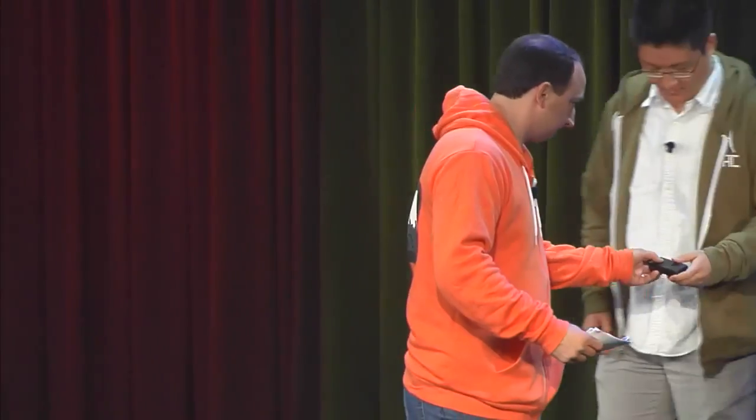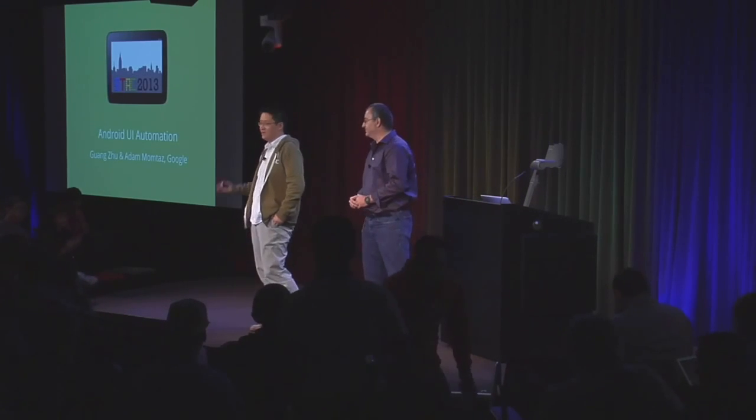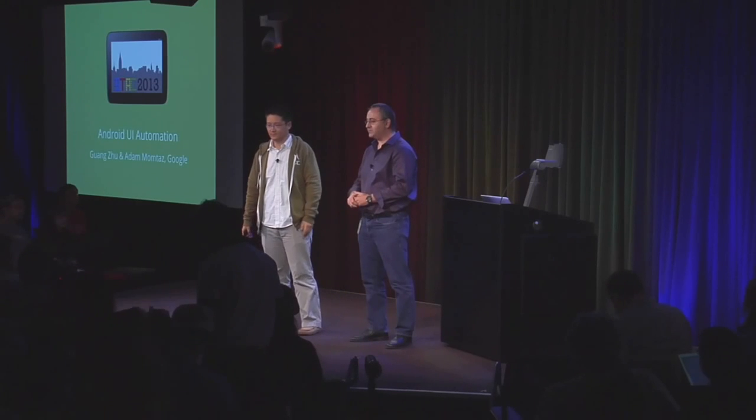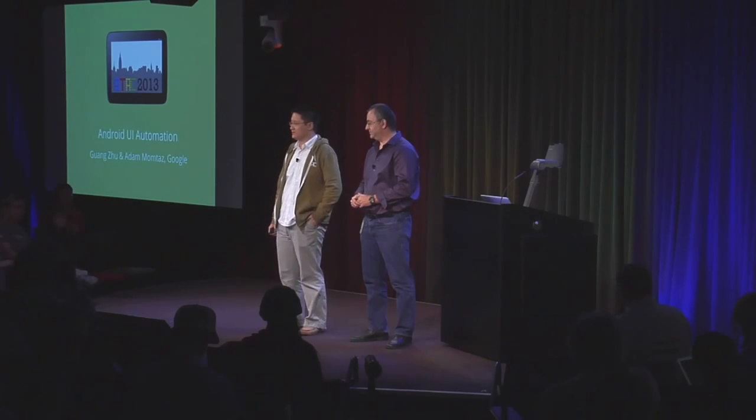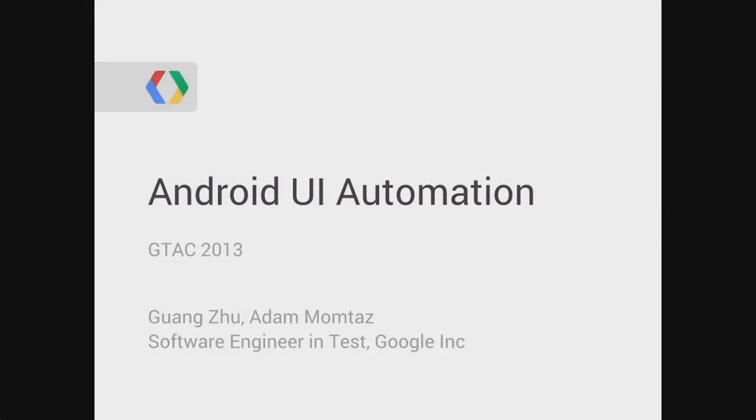We're going to pick up our next set of speakers. We're going to have Guan Zhu and Adam Montez from Google come and talk to us about Android UI automation. My name is Guan Zhu. I'm Adam Montez. We are software engineering tests working at Google on Android test engineering. Today we're going to talk about Android UI automation. I'll give an overview of the technologies, and Adam will show details of the UI Automator APIs.